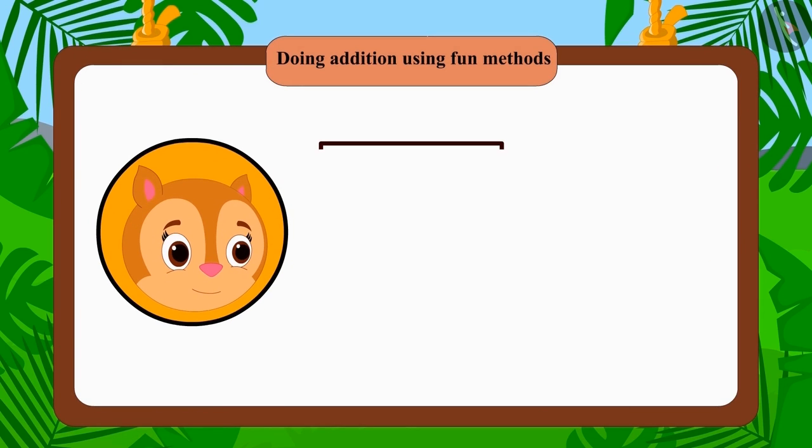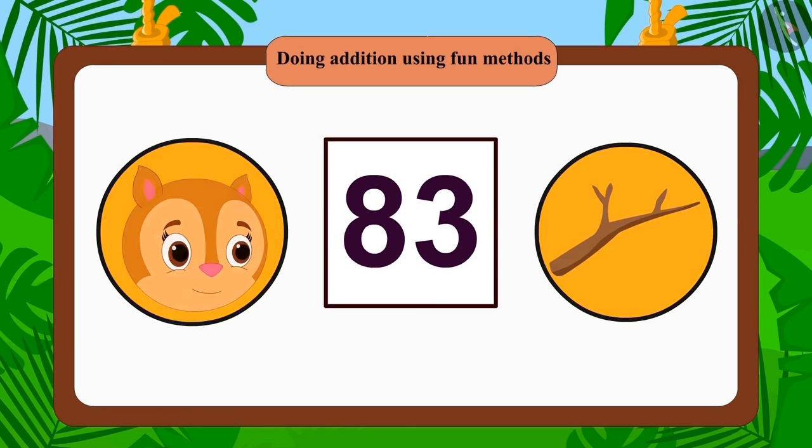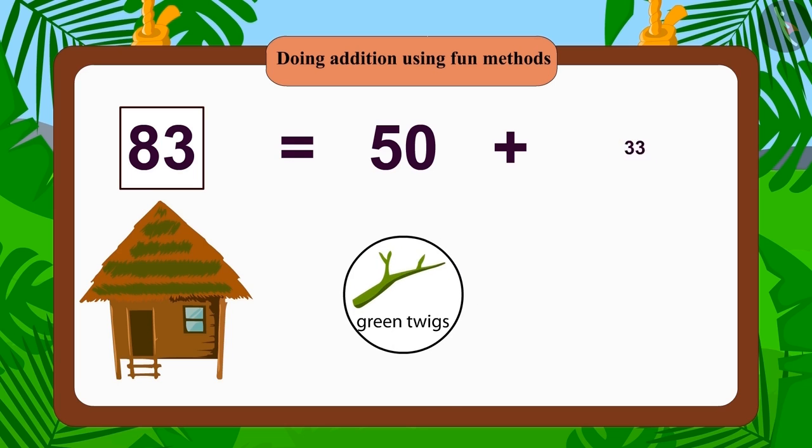Chanda collected 83 thin twigs for her house and built her own small house. She first used 50 green twigs and 33 brown twigs, but Chanda did not like the design of the house.